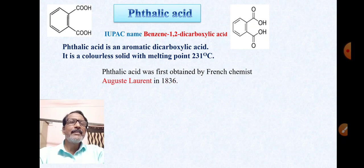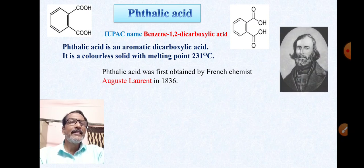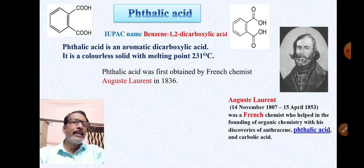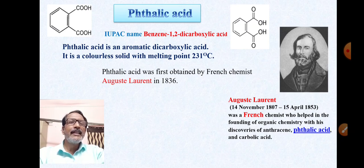Phthalic acid was first obtained by French chemist Auguste Laurent in 1836. Auguste Laurent (14 November 1807 – 15 April 1853) was a French chemist who helped in the founding of organic chemistry with his discoveries of anthracene, phthalic acid, and carbolic acid.